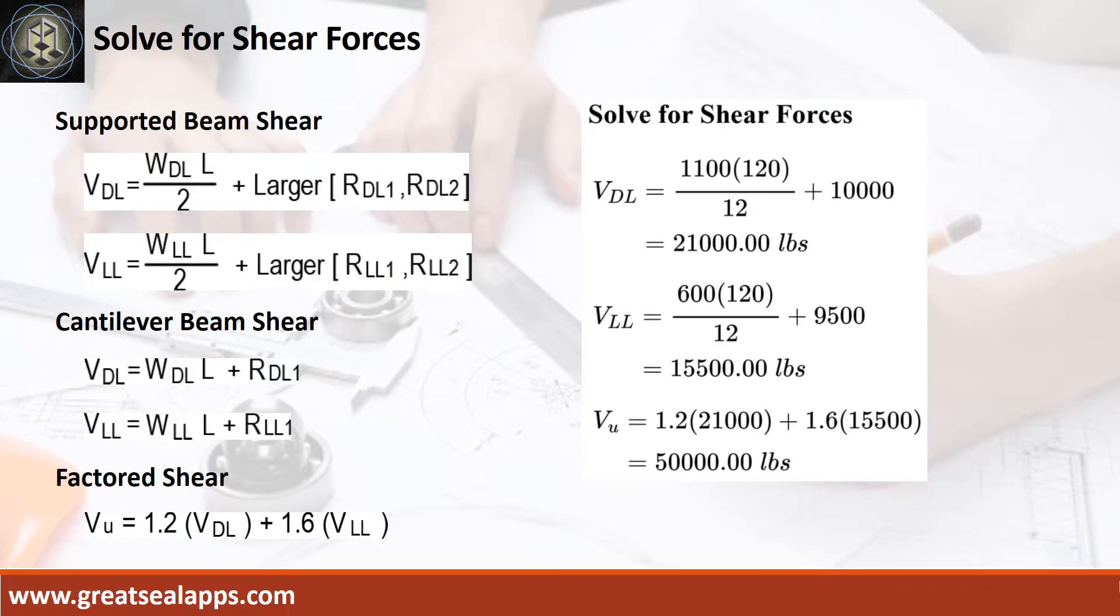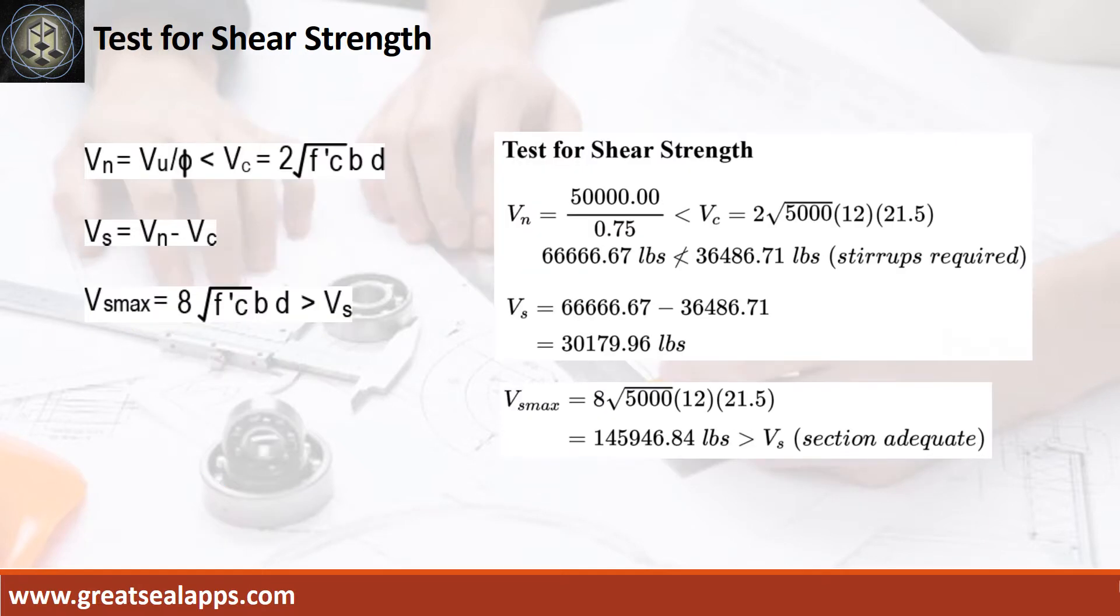The shear force for dead load is 21,000 pounds. The shear force for live load is 15,500 pounds, for a maximum shear force of 50,000 pounds. The nominal shear force is 66,666.67 pounds, greater than 36,486.71 pounds concrete capacity. The shear force capacity in stirrup is 30,179.96 pounds, less than 145,946.84 pounds maximum stirrup capacity.